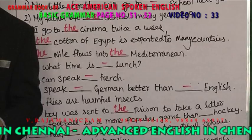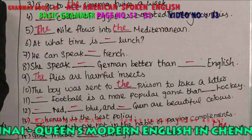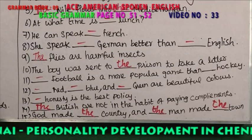At what time is lunch? Not 'the lunch' — before meals you are not supposed to use 'a' or 'the.' He can speak French — in front of a language you are not supposed to use 'a' or 'the.' She speaks German better than English. You are not supposed to use 'a German' or 'an English' before a language.